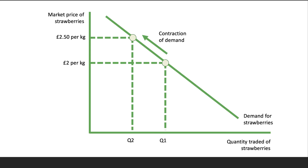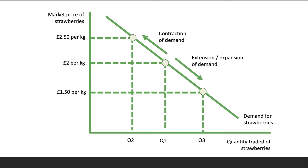If the price were to go up to two pounds fifty per kilogram, other things being the same, we would expect a contraction of demand - we'd expect some consumers to cut back on their demand for strawberries, perhaps switching to an alternative product. Equally, if the price came down to one pound fifty per kilogram, that price reduction acts as an incentive for consumers to increase demand - we call it an extension or expansion of demand - you're moving down the demand curve. The key point is that a change in the market price of strawberries itself causes a movement along the demand curve.